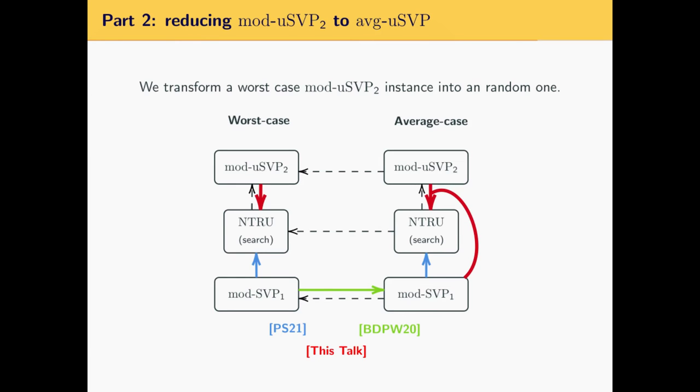Next, we give a random self-reduction for module USVP in rank 2. We show that there exists a distribution over its instances such that if someone can solve module USVP in rank 2 with non-negligible probability for an instance sampled from the distribution, then they can solve every instance of module USVP in rank 2. This is done by giving an algorithm that randomizes, in an invertible way, any instance of module USVP in rank 2.